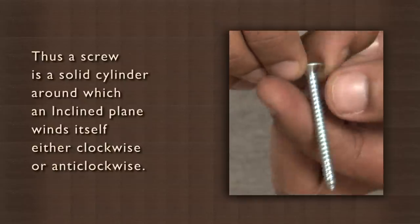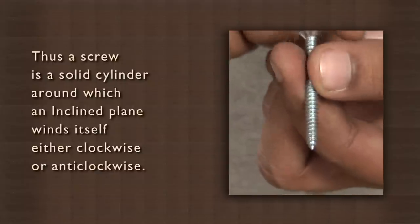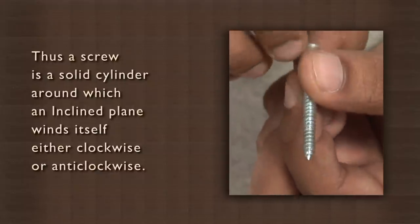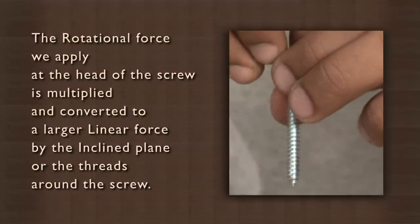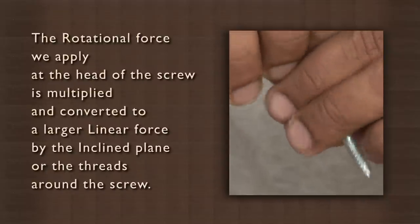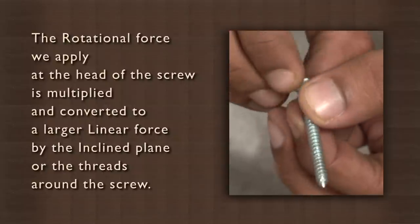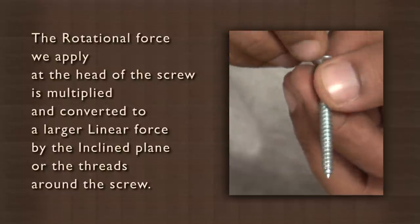Thus a screw is a solid cylinder around which an inclined plane winds itself either clockwise or anticlockwise. The rotational force we apply at the head of the screw is multiplied and converted to a larger linear force by the inclined plane or the threads around the screw.